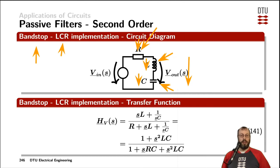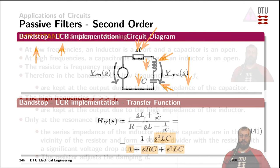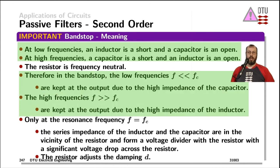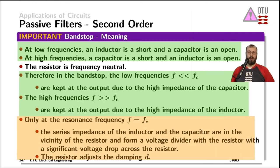Exactly as with the implementation through stacking or paralleling, we get a term with the frequency squared in the numerator and a characteristic polynomial with s squared and a term with s in the denominator. For low and high frequencies, the impedances of the inductor and capacitor are dominating the passband behavior, and at the resonance frequency the resistor dominates and adjusts the Q value or the damping factor.